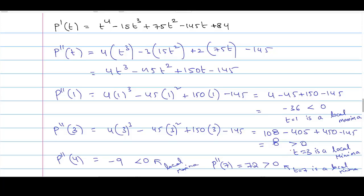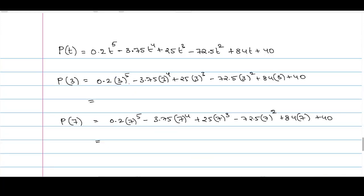We have got two local minimum points: t = 3 and t = 7. Out of these two points, which one will be the global minimum? Just check the function value at these two points — whichever is minimum will be the global minimum. P(3) = 0.2×3⁵ − 3.75×3⁴ + … = 59.35. Similarly, P(7) = 8.15.